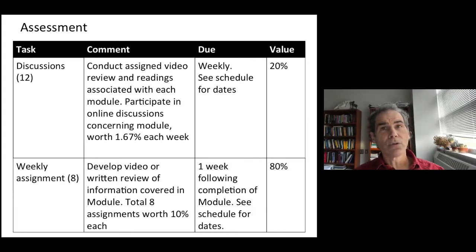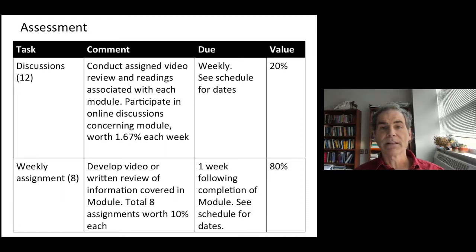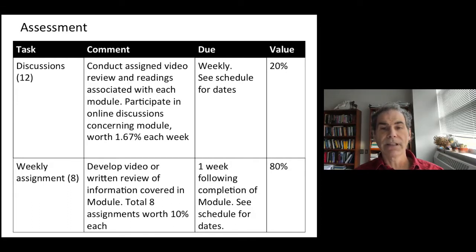For eight of the 12 weeks, there will be an assignment associated with that topic, where the student will be expected to develop either a video or a written review covering the information in the assigned videos and readings. There will be a total of eight of these assignments worth 10 percent each, for a total of 80 percent. The completion dates for these assignments — both the discussions and weekly assignments — are available on the syllabus.